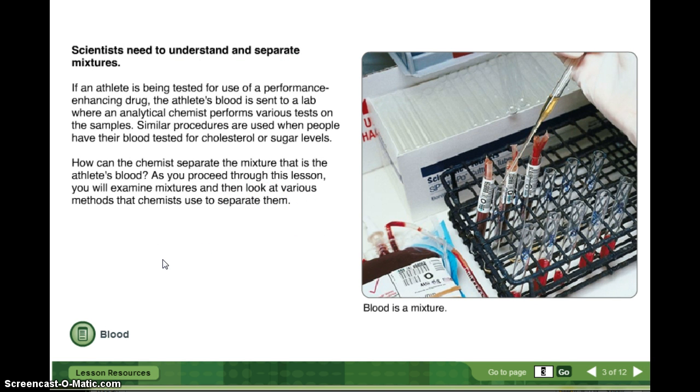Scientists need to understand and separate mixtures. If an athlete is being tested for use of a performance enhancing drug, the athlete's blood is sent to a lab where an analytical chemist performs various tests on the samples. Similar procedures are used when people have their blood tested for cholesterol or sugar levels. How can the chemist separate the mixture that is the athlete's blood? As you proceed through this lesson, you will examine mixtures and then look at various methods that chemists use to separate them.